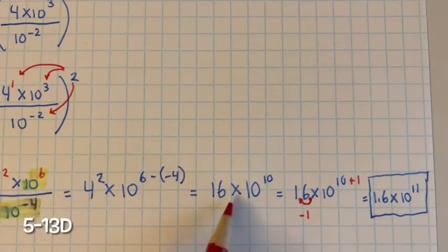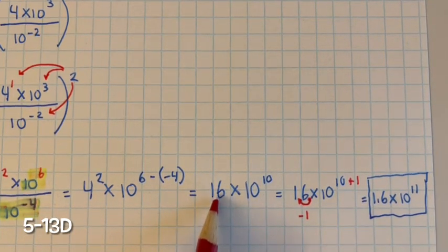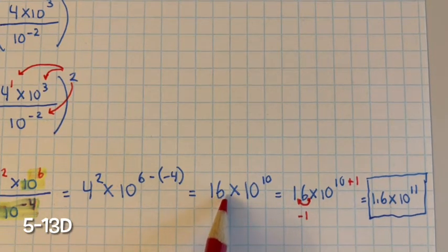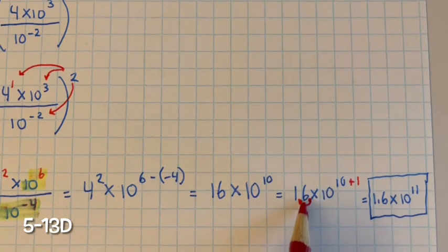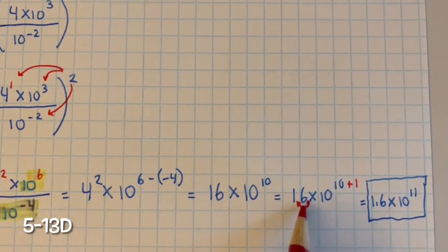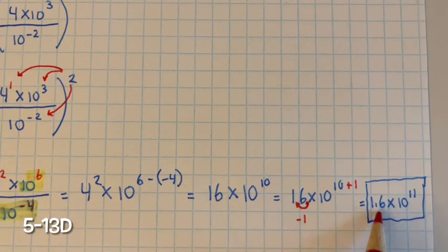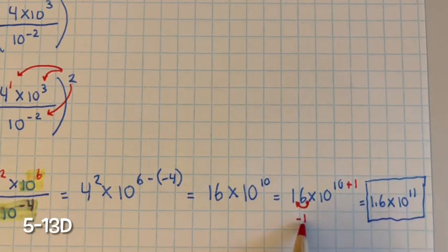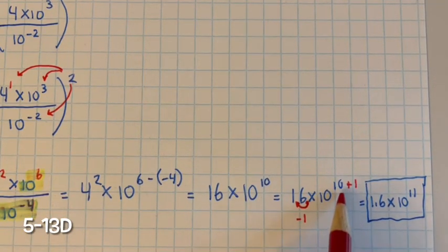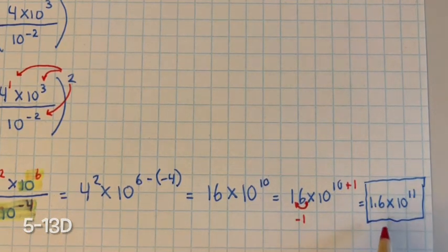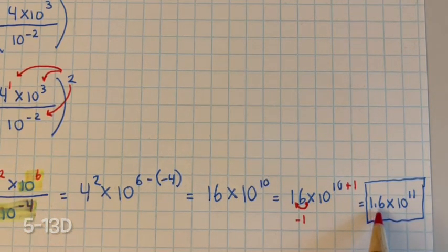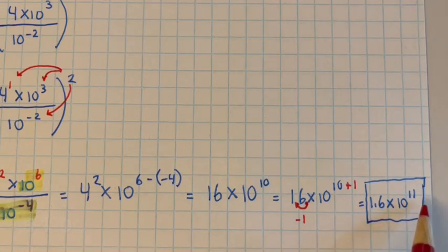Remember, in scientific notation, the A term has to be greater than or equal to 1 but less than 10. Well, 16 is greater than 10, so we're going to decrease it by dividing by 10 — one place value to the left — which gives us 1.6. If we decrease A by dividing by 10, we have to multiply the power of 10 by 10, so we add 1 to the exponent: 10 plus 1 is 11. This gives us 1.6 multiplied by 10 to the 11th power.